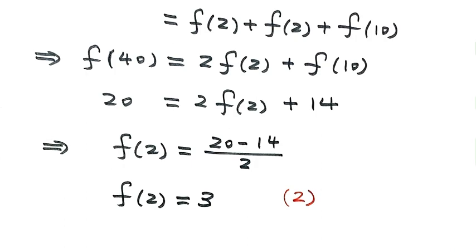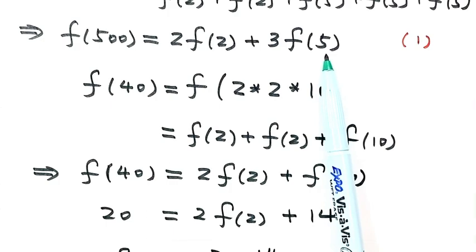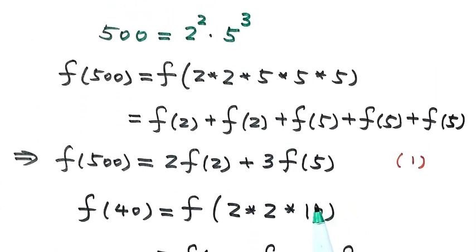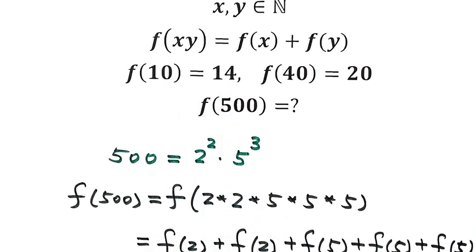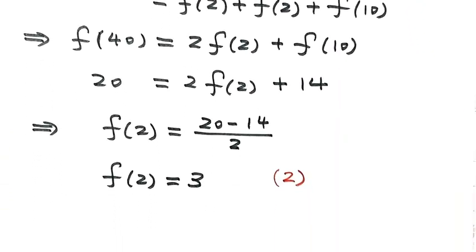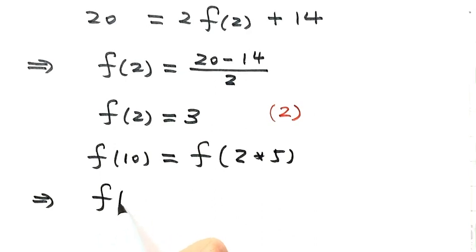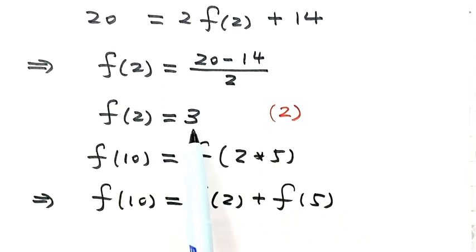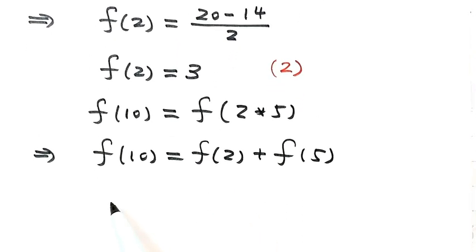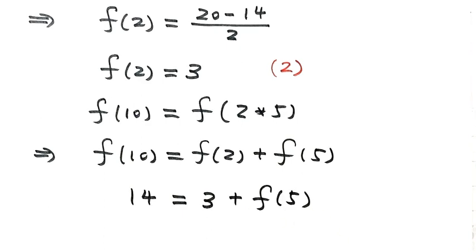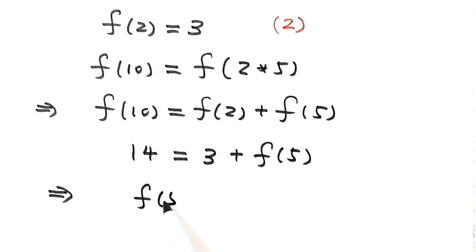Now we need to figure out f of 5. We use f of 10 equals 14. Since 10 equals 2 times 5, applying the condition gives f of 10 equals f of 2 plus f of 5. We just figured out f of 2 equals 3, and f of 10 equals 14, so f of 5 equals 14 minus 3, which is 11. We label this as Result 3.